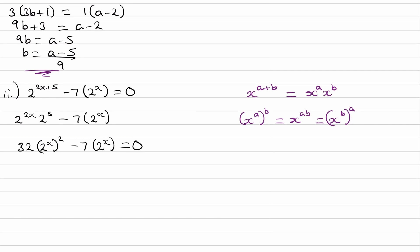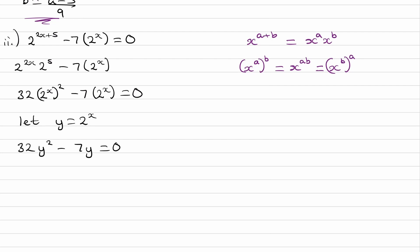So this is your quadratic. So if I were to let y equals 2 to the power of x, then this will become 32y squared minus 7y is equal to 0. I can factorize out the y, and then I can solve. So y is equal to 0. 32y minus 7 is 0. So that gives us y is equal to 7 over 32.